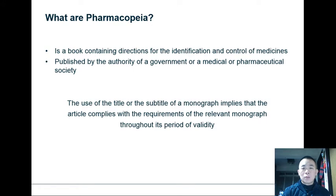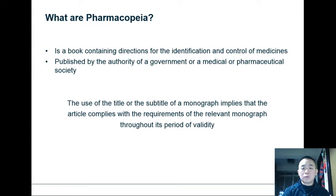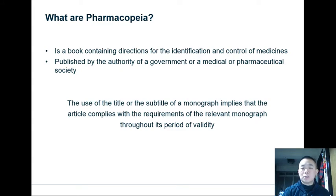A lot of the time when you start looking at pharmacopoeias you'll see references being made to these books. If you see a reference being made, the use of the title or subtitle of a monograph implies that the article you're reading complies with the requirements of the relevant monograph throughout its period of validity. One example of this is when you're reading specifications for a particular drug product — if it references an article in USP, that means that particular part of the specification follows the USP article.